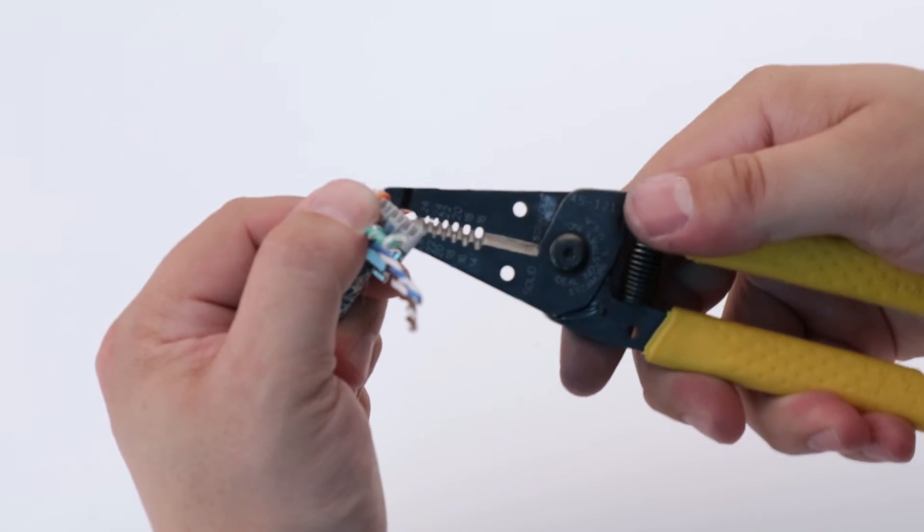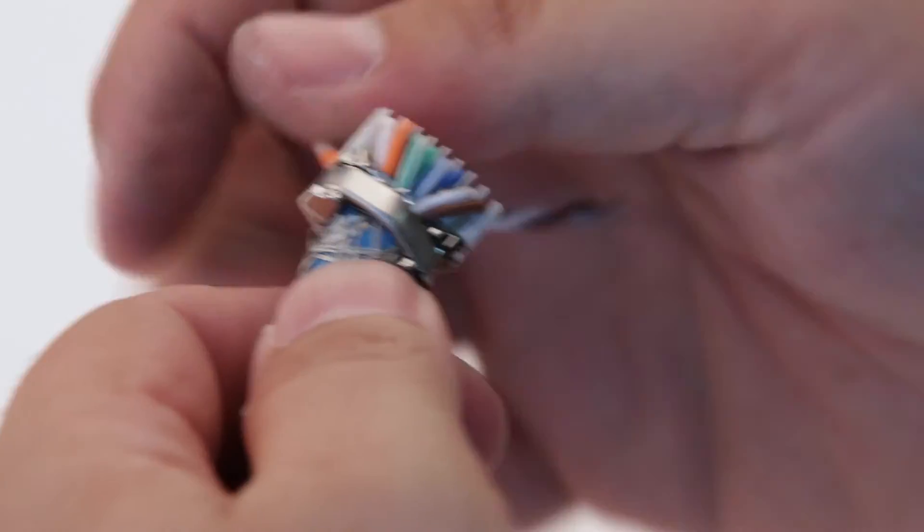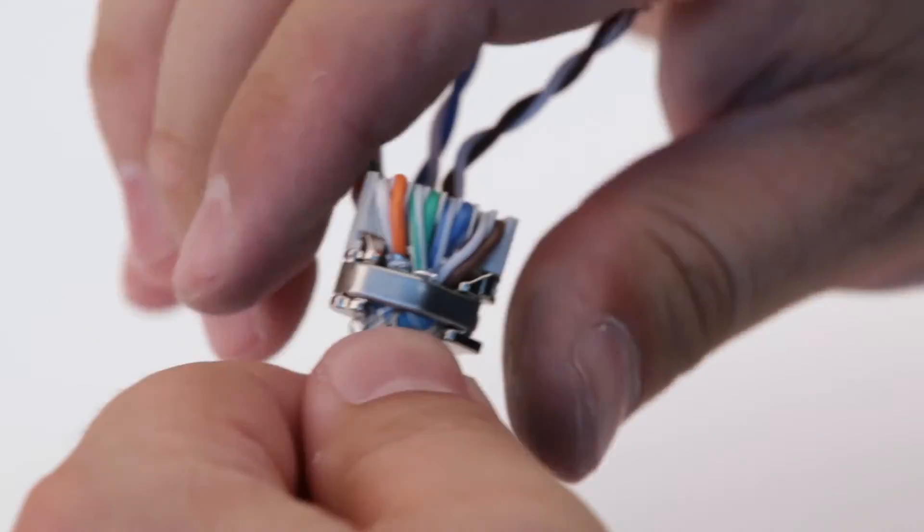Using your fingers or pliers, gently pull each wire downward to fully seat the wire into the appropriate channel. Be sure each wire lies below the top surface of the termination module.